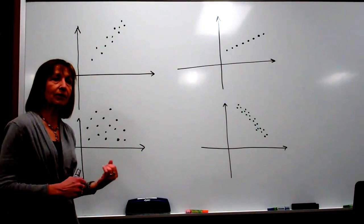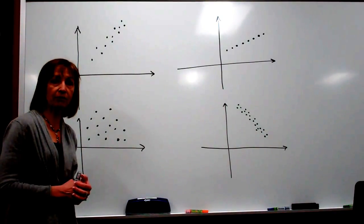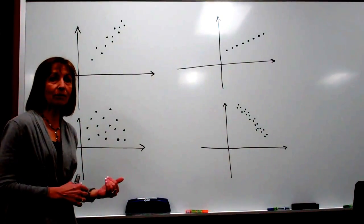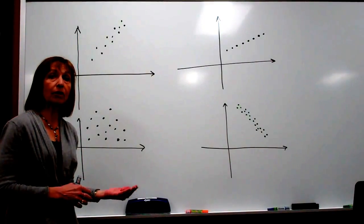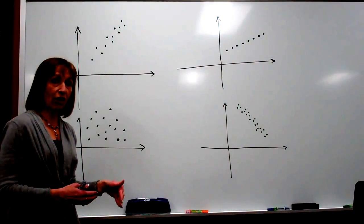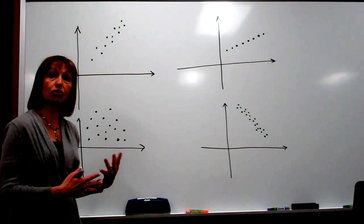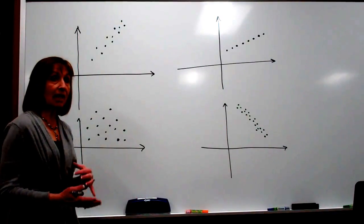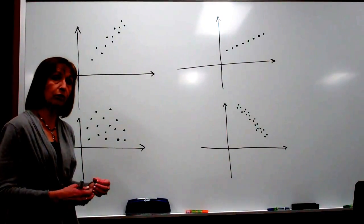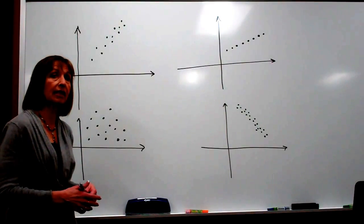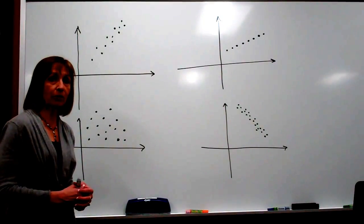I want to make sure that I stress the point that when we say that there's a correlation between variables, we can't say that we necessarily are showing that one variable is affecting the other. It's just that they have a relationship that trends together — it's not a cause-and-effect relationship. We're just trying to see if there's a general trend so that we can make a prediction.